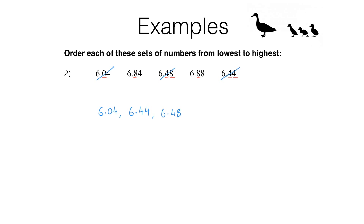We've got two remaining numbers and they both begin with 6.8, so again we need to go and look at the next place value column along — the hundredths column. Here we've got a 4 and an 8. The 4 is the smaller number, so that gives us our order: we've got 6.84 next and 6.88 last.